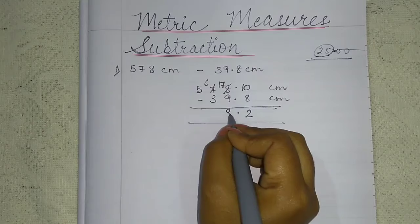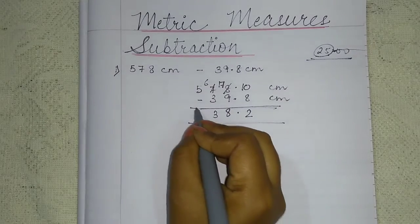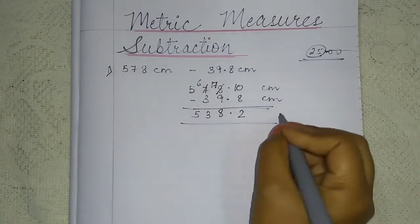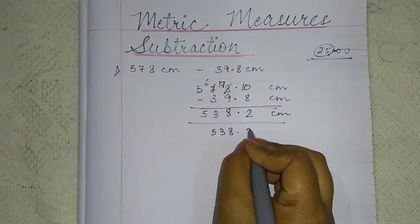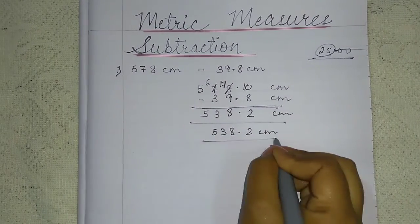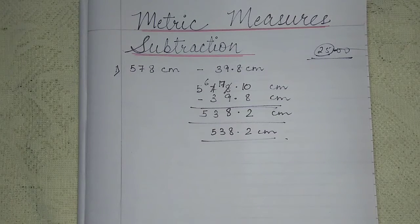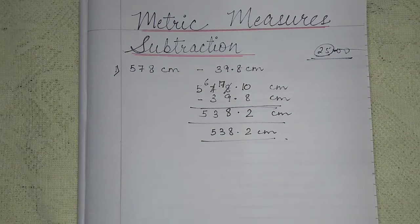Now 17 minus 9 is equal to 8. 6 minus 3 is 3. 5 minus 0 is 5. So we have got the answer: 538.2 centimeter. Okay? This was of the same unit, so it was too easy.